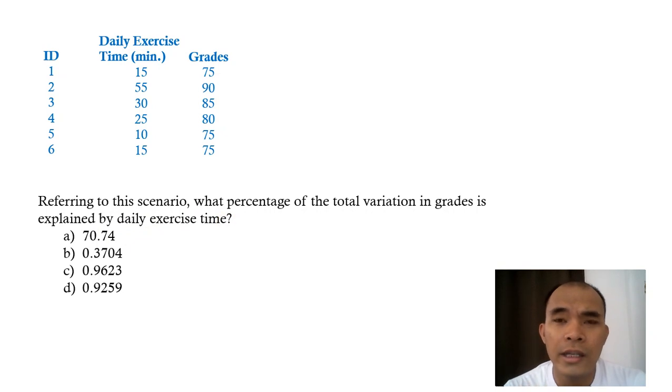When you're talking about the total variation explained by the independent variable, that is just referring to the R-squared.